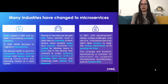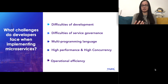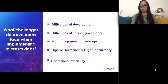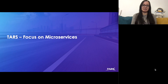Those are just some examples showing that companies are using microservices and how beneficial it can be for an enterprise. But since nothing is easy, microservices also has its problems and challenges — for example, difficulties of development, difficulties of service governance, supporting multiple programming languages, problems with performance and concurrency, and problems with operational efficiency. The solution to those problems is TARS, which focuses on microservices and provides solutions to all of the aforementioned problems.